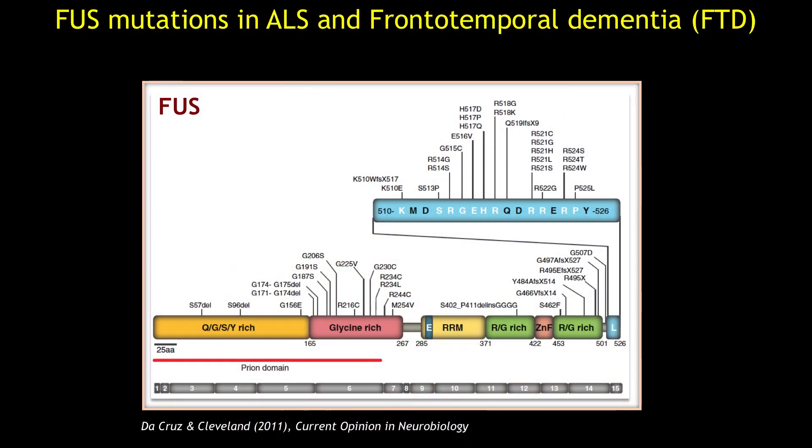About 10% of ALS cases are inherited or familial, and the identification of mutations in these causative genes has been instrumental in understanding the mechanisms underlying the disease. In this study, our aim was to understand how mutation in one of these ALS causative genes, named FUS, causes toxicity.